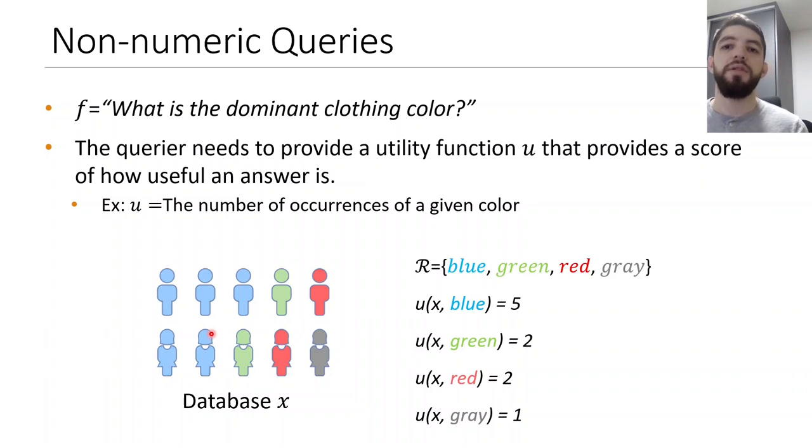For instance, the global sensitivity of this query, what is the dominant clothing color, is 1. Because adding or removing an individual from this database will change the utility score of any color by just 1.